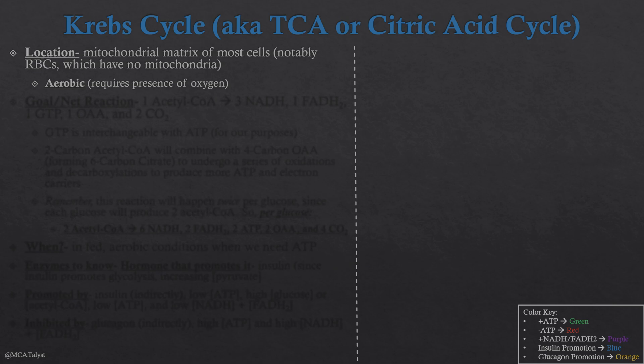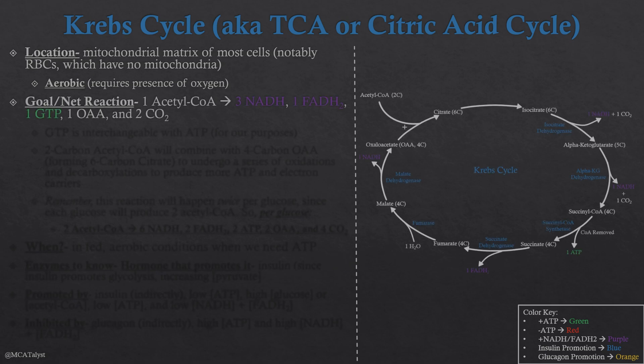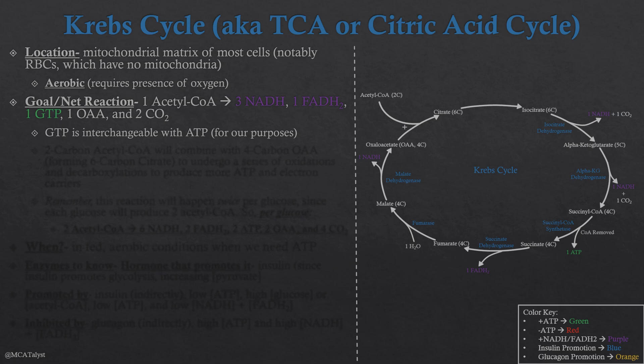The net reaction of the Krebs cycle: we're adding one acetyl-CoA to this looping reaction, and adding that acetyl-CoA to the loop is going to cause us to create three NADH, one FADH2, one GTP, one oxaloacetate — which is basically the ending product — and two carbon dioxides. One thing to note is that GTP is interchangeable with ATP, so from here on out I'm just going to use ATP, even though technically in the actual reaction we're making GTP.